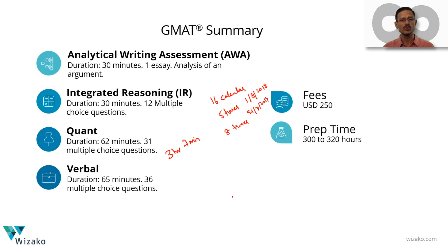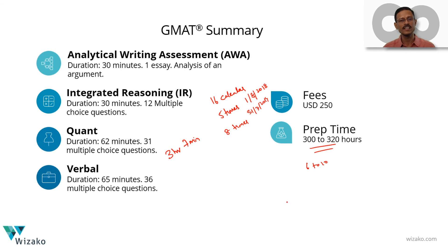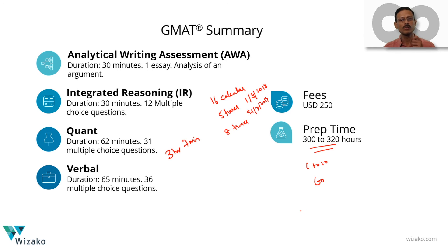The most important thing as you start preparation is understanding the total investment. Plan for 300 to 320 hours for all four sections, not counting mock tests. Roughly 6 to 10 mock tests are recommended, each over 3 hours plus about 3 hours to analyze — adding another 60 hours. So budget for a total of 350 to 400 hours if you are serious about scoring 700 plus on the GMAT.